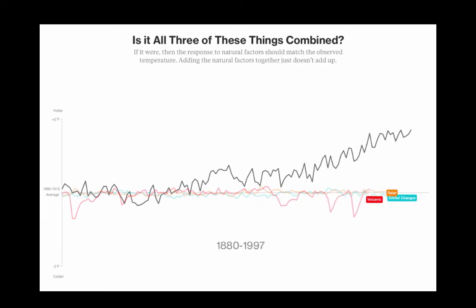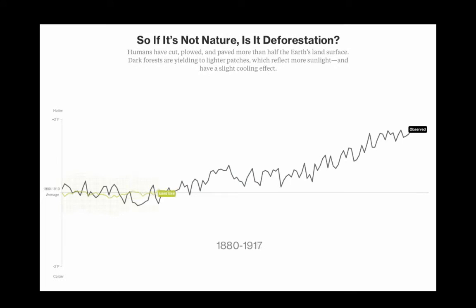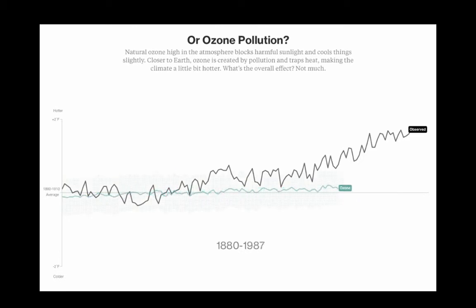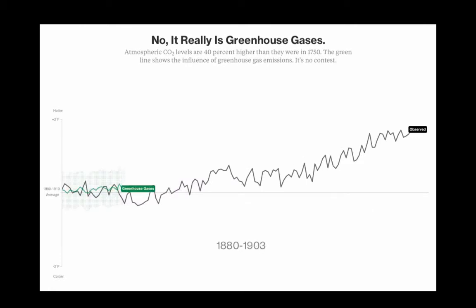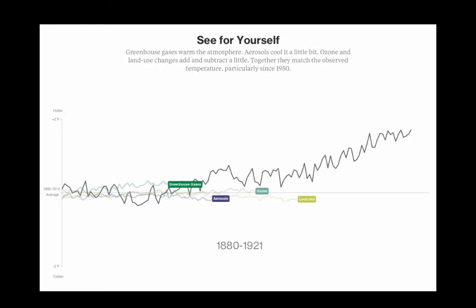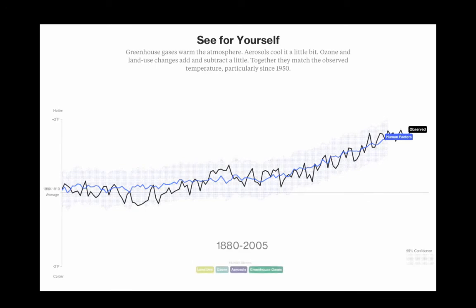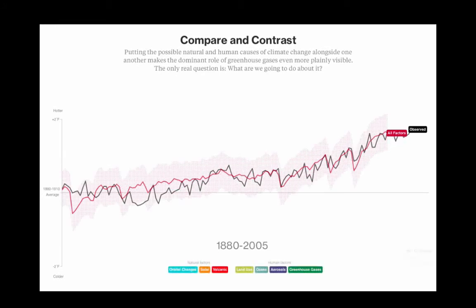If you put together all of the natural changes together, what you see is a large mismatch between the observations and the model predictions. But if you include the human contributions — land use change, ozone pollution, ozone depletion in the stratosphere, aerosols, air pollution, and of course the increases in greenhouse gases — what we find is that it is in fact the increase in greenhouse gases that is dominating the warming observed over the 20th century. The net result of all the human factors matches the long-term trends extremely well. And when you include both the natural and the anthropogenic forcings, you get an extremely good match to the observed trends, giving us confidence that we can explain how and why the changes have happened, and therefore what is likely to continue in the future.